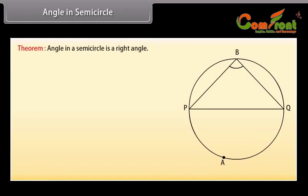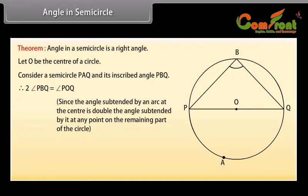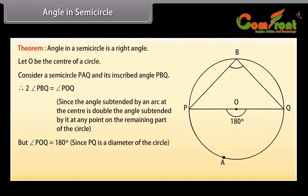Angle in a semicircle — Theorem: the angle in a semicircle is a right angle. Let O be the center of a circle. Consider a semicircle PAQ and its inscribed angle PBQ. Therefore 2 times angle PBQ equals angle POQ, because the angle subtended by an arc at the center is double the angle subtended at any point on the remaining part. But angle POQ equals 180 degrees because PQ is a diameter. So 2 times angle PBQ equals 180 degrees, therefore angle PBQ equals 90 degrees.